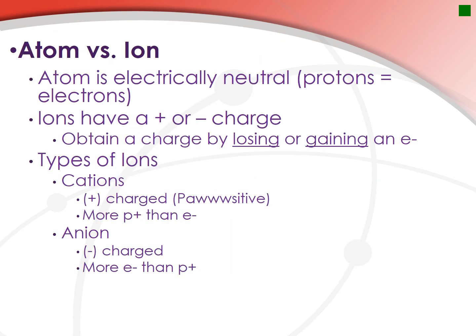You need to learn the different definitions of an atom versus an ion, and we'll also introduce isotopes. An atom is electrically neutral — neither positive nor negative. In order for that to be true, your protons, which give you a positive charge, have to be equal to your electrons, which give you a negative charge. So an atom has an equal number of protons and electrons.